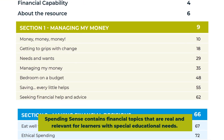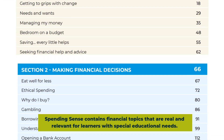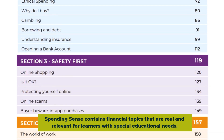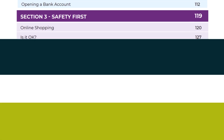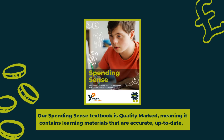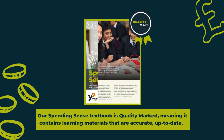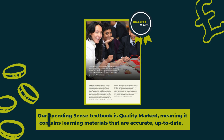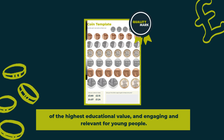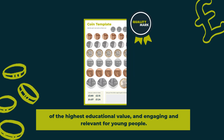Spending Sense contains financial topics that are real and relevant for learners with special educational needs. Our Spending Sense textbook is quality marked, meaning it contains learning materials that are accurate, up-to-date, of the highest educational value, and are engaging and relevant for young people.